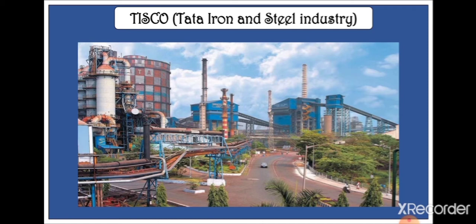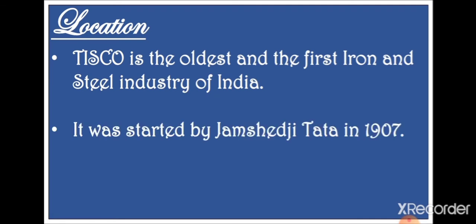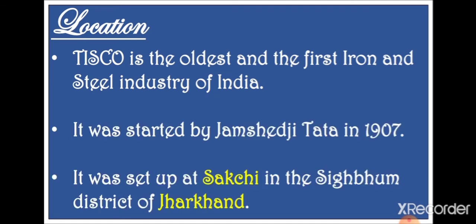Now let us learn about the location of this industry. TISCO is the oldest and first modern iron and steel manufacturing industry in India, where steel was manufactured with the help of machinery. It was started by Jamshedji Tata in 1907, and this industry is located at a place known as Sakchi in Singhbhum district of Jharkhand. Later on, this area was renamed after Jamshedji and is now known as Jamshedpur.